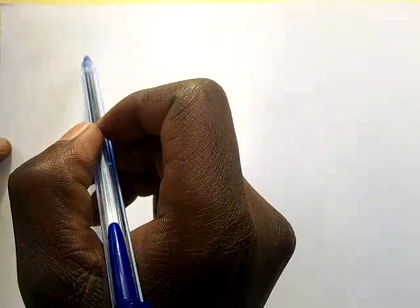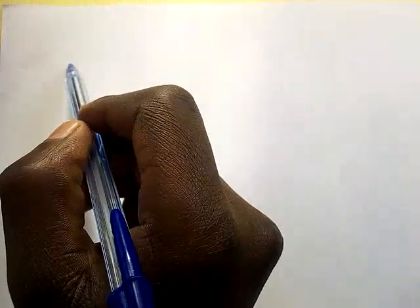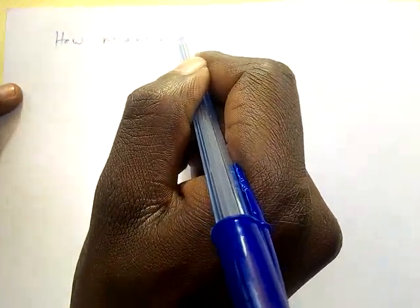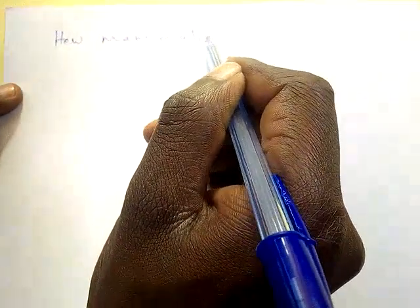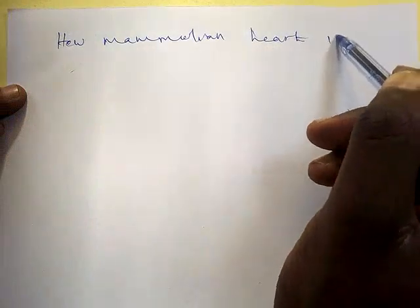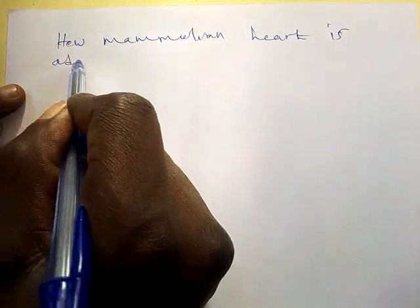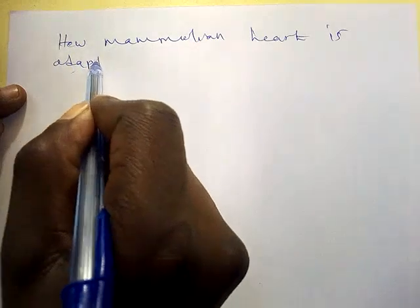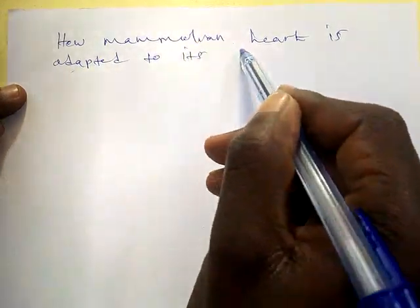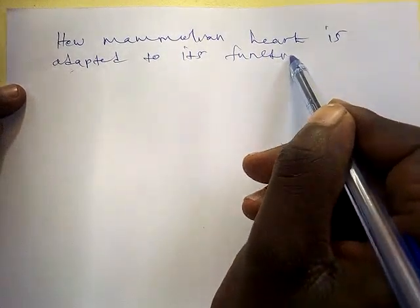Welcome. I want to take you through an essay which is done in Paper 2 Biology, and today we are dealing with how the mammalian heart is adapted to its functions.